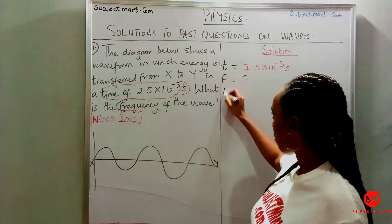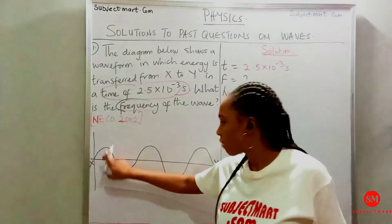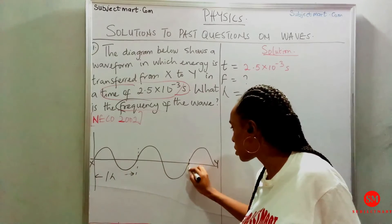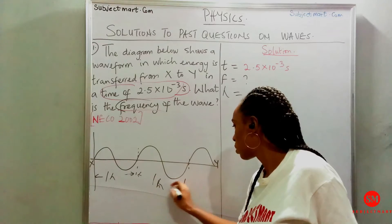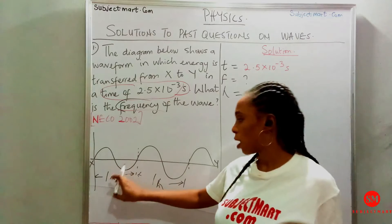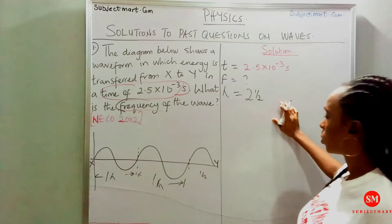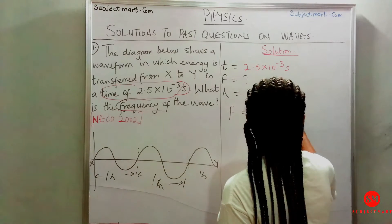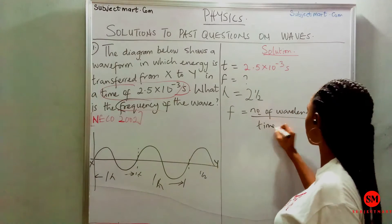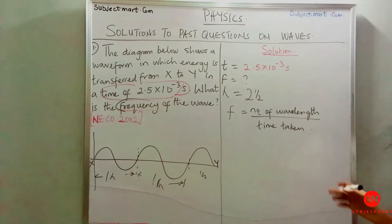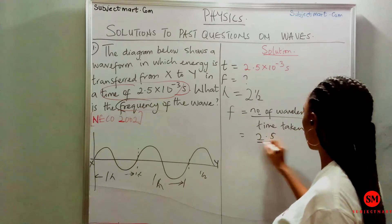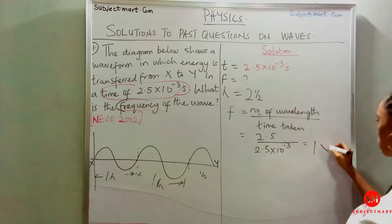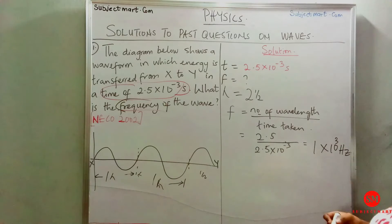From the diagram we can get our lambda, which is the wavelength. We have a crest and a trough — this is 1 wavelength. From here to here is another 1 wavelength, and here we have only half. So altogether we have 1 + 1 + 0.5, giving us 2.5 wavelengths. Using the formula f equals number of wavelengths over time taken, we have 2.5 over 2.5 times 10 to the power minus 3 seconds, which gives us 1 times 10 to the power 3 Hz as the frequency.